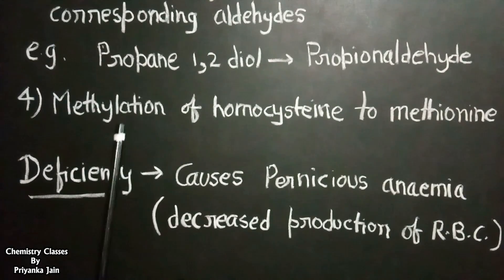These are some of the functions of vitamin B12. And what happens when there is deficiency of vitamin B12? Its deficiency causes pernicious anemia. This is due to decreased production of red blood cells and causes effects in the central nervous system.